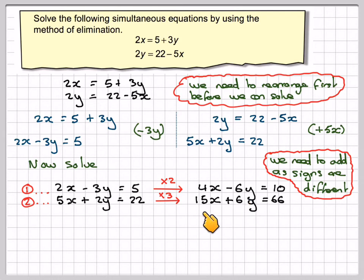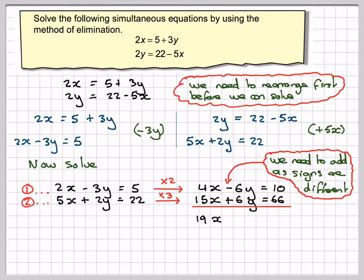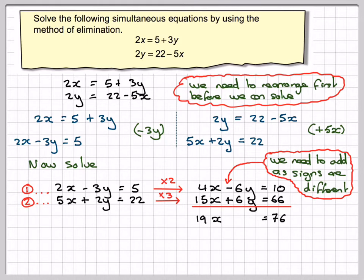So 4x plus 15x makes 19x. Minus 6 plus 6 gives nothing — we've eliminated a variable. And then 10 plus 66 makes 76. If I divide by 19, x is going to be equal to 4.